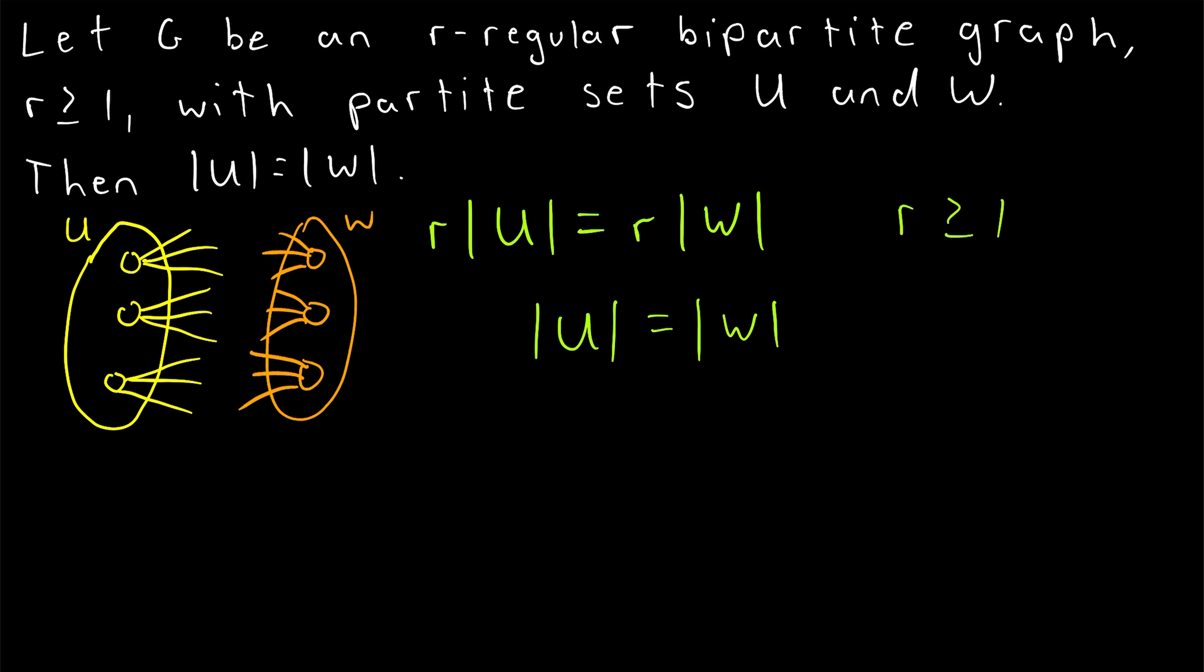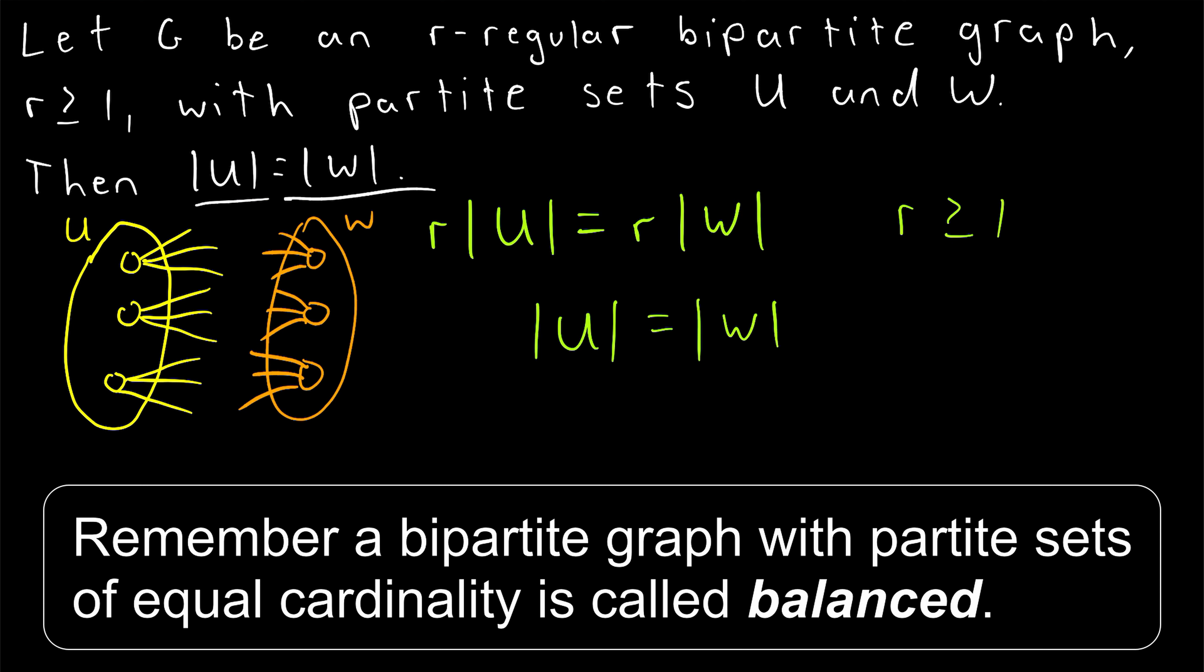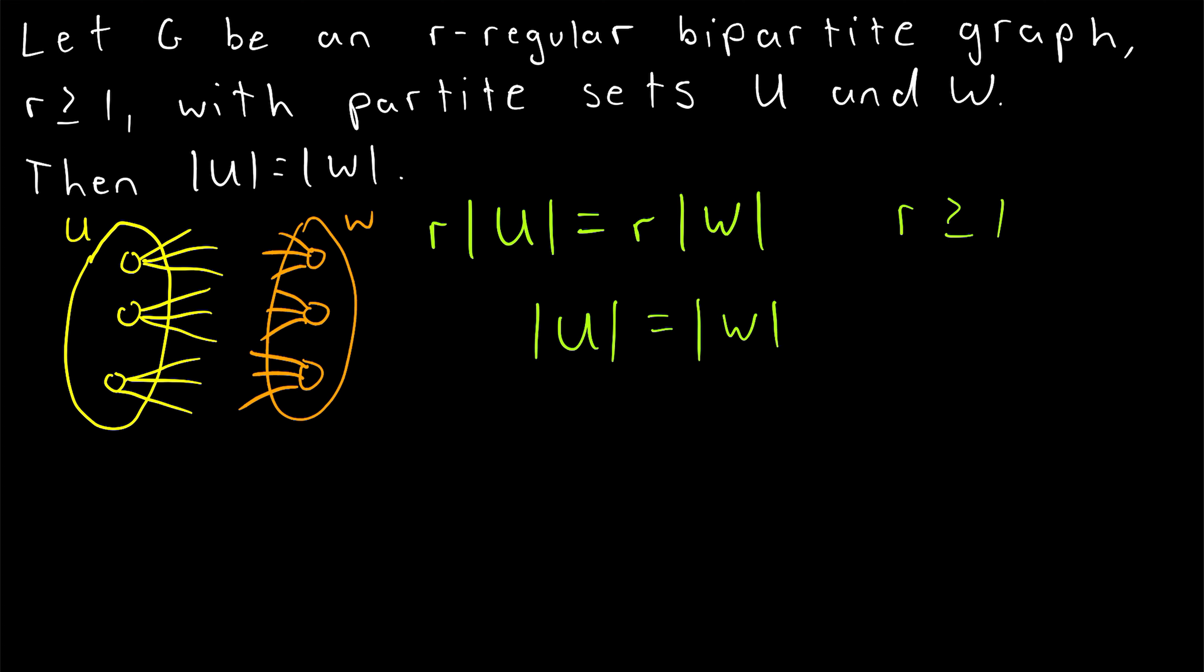So if G is an r-regular bipartite graph with r greater than or equal to 1 and partite sets U and W, the number of vertices in U is equal to the number of vertices in W. Hope this video helped you understand how to prove this simple result about bipartite graphs.